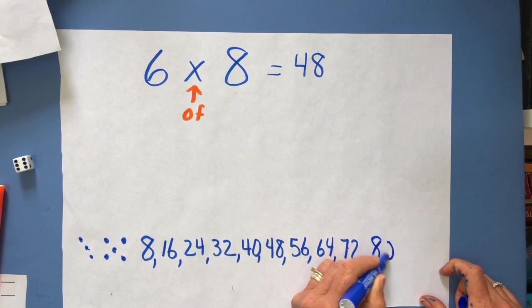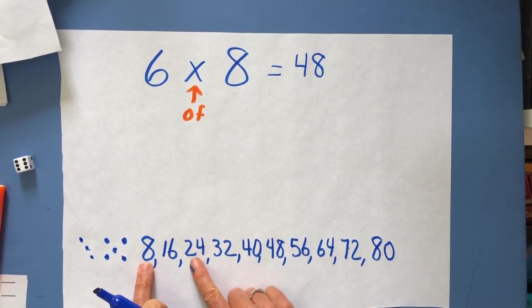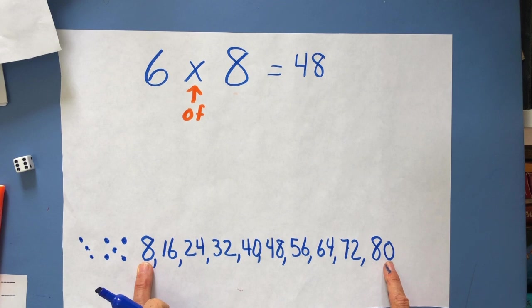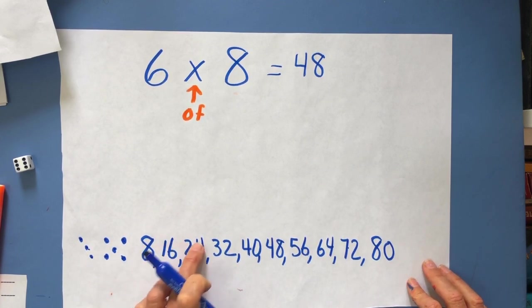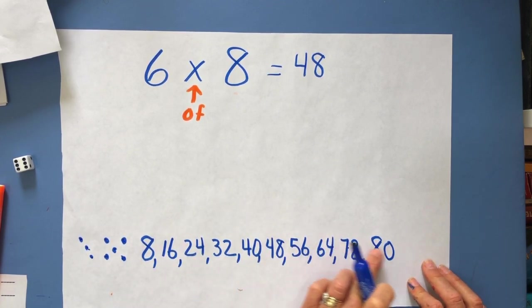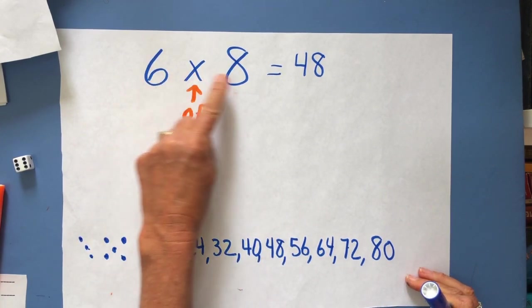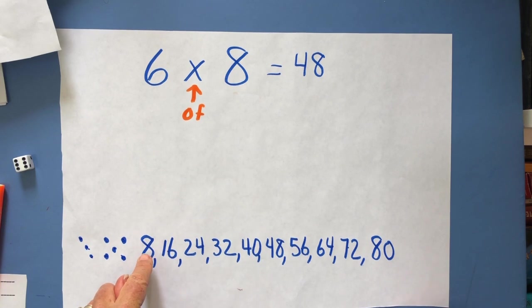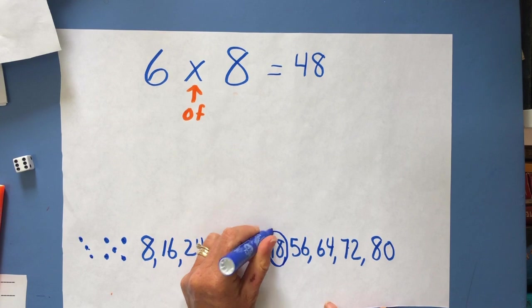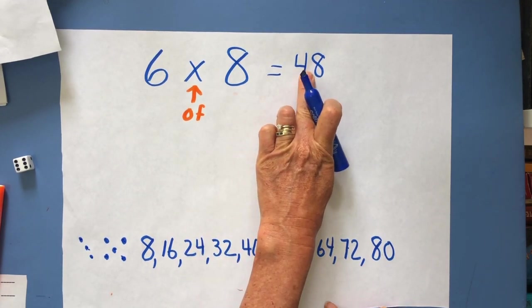So again, I know I'm done because I was doing my eights and then I had an eight in the tens place and then I had zero. So I know I've got ten. Let's check. One, two, three, four, five, six, seven, eight, nine, ten. Good. But this doesn't say ten groups of eight. It says six groups of eight. So I'm just going to count up six: one, two, three, four, five, six. And my answer is forty-eight, just like it was when I used my fingers.